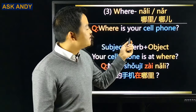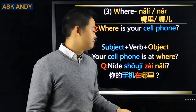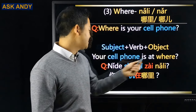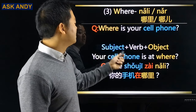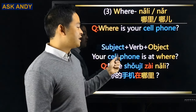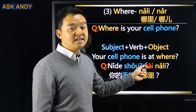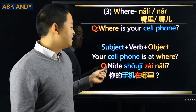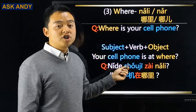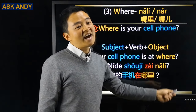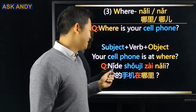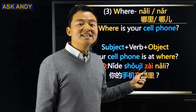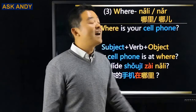'Where is your cell phone?' Same pattern — Subject-Verb-Object: 'your cell phone is at where' gives 你的手机在哪里?